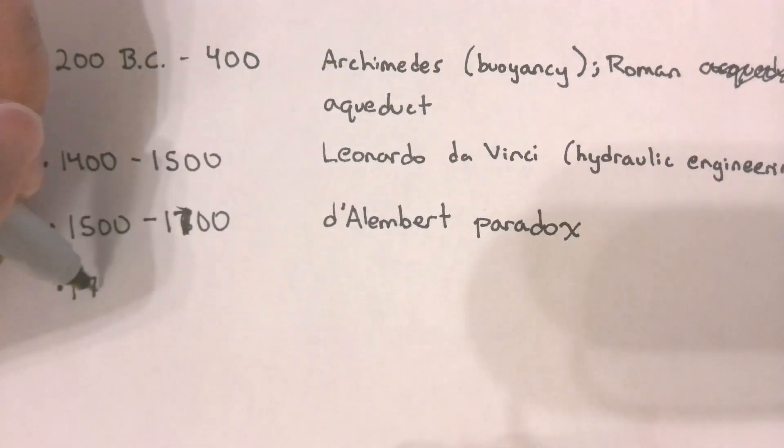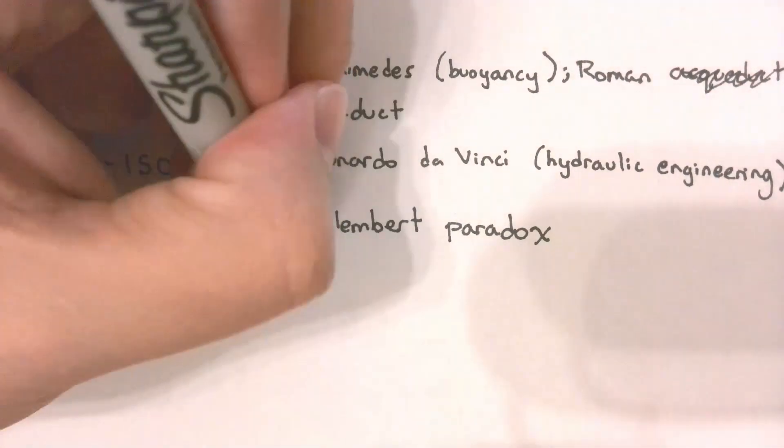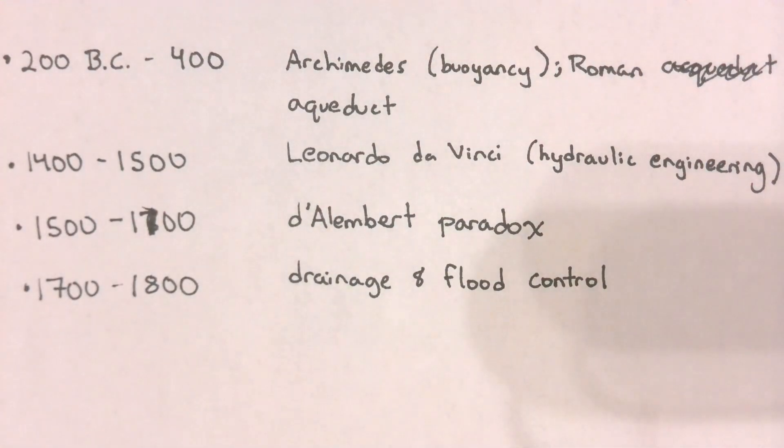Throughout the next couple of centuries, hydrodynamics and hydraulics would function as essentially two separate fields. During the 1700s there were several developments made in the fields of drainage and flood control. Some of the empirical equations that we use even to this day in civil engineering were developed during that time.